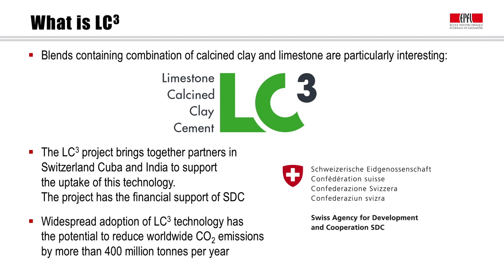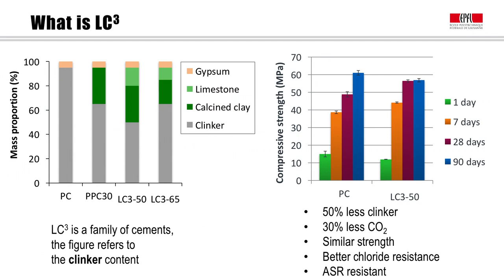Looking at what LC3 is, the graph here shows different proportions. In a conventional Type 1 Portland cement, we would have about 95 percent clinker and 5 percent gypsum. Calcined clay has been known for a long time to be pozzolanic, in the same way that fly ashes are. This is what we mean by a PPC-30, where typically you would replace 30 percent of the clinker by calcined clay.